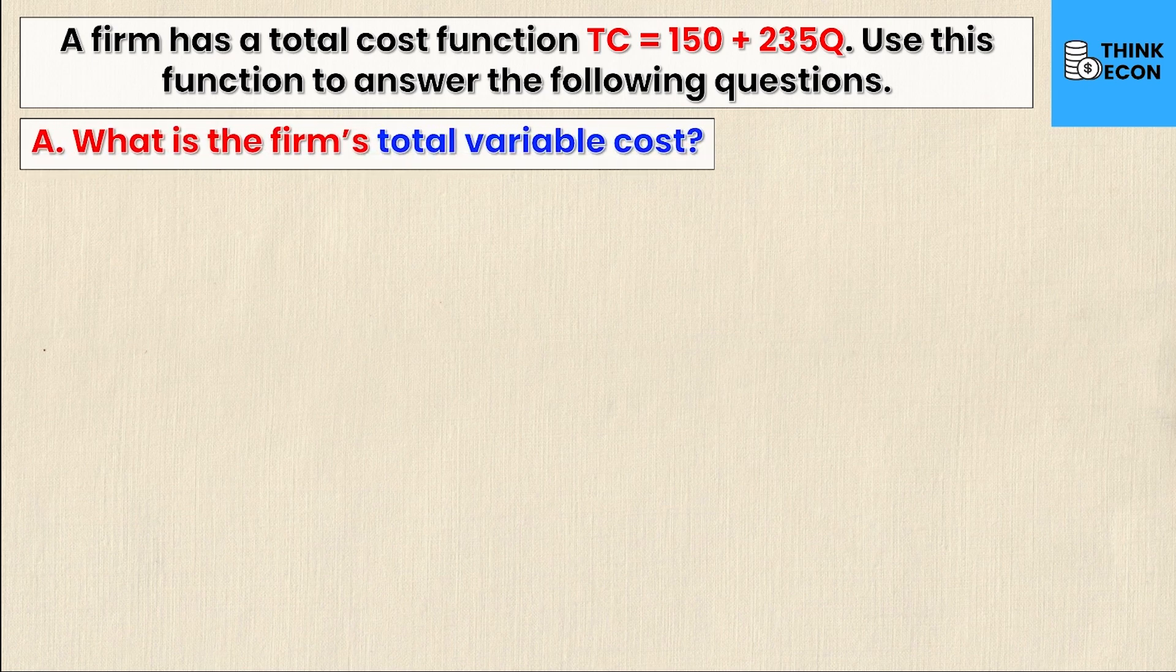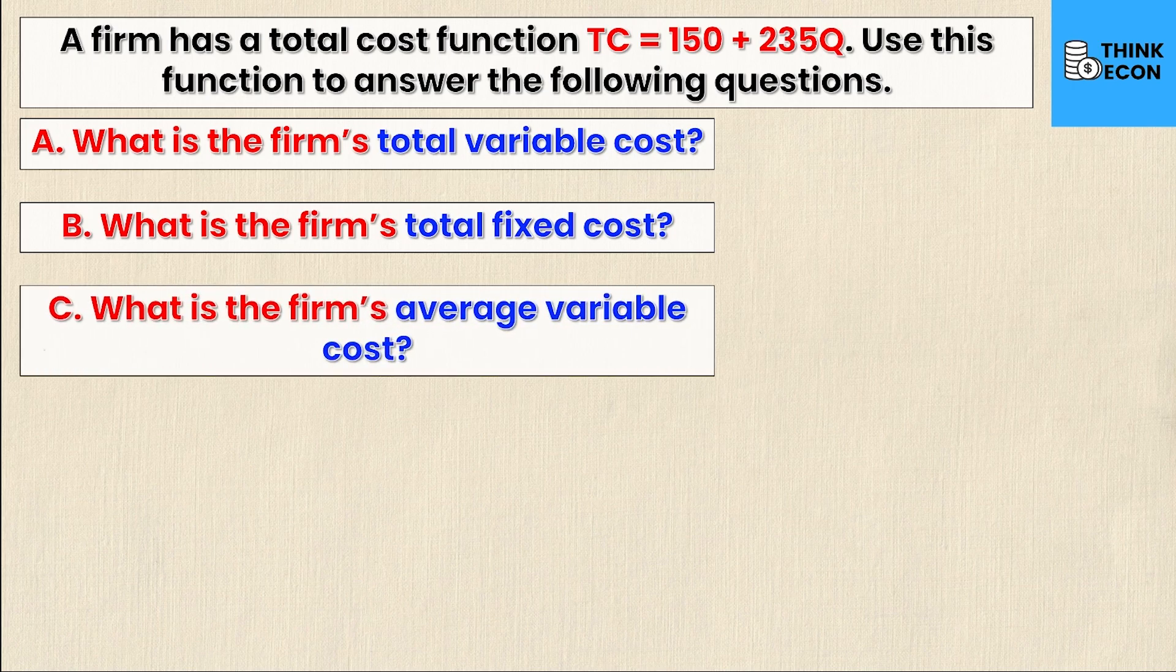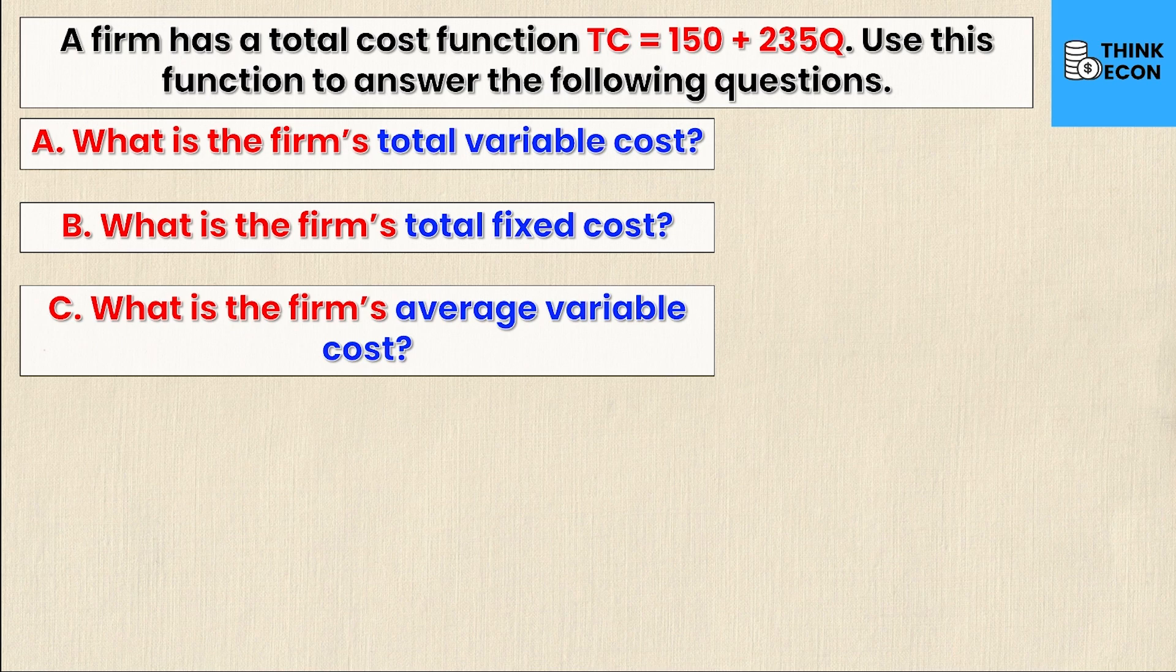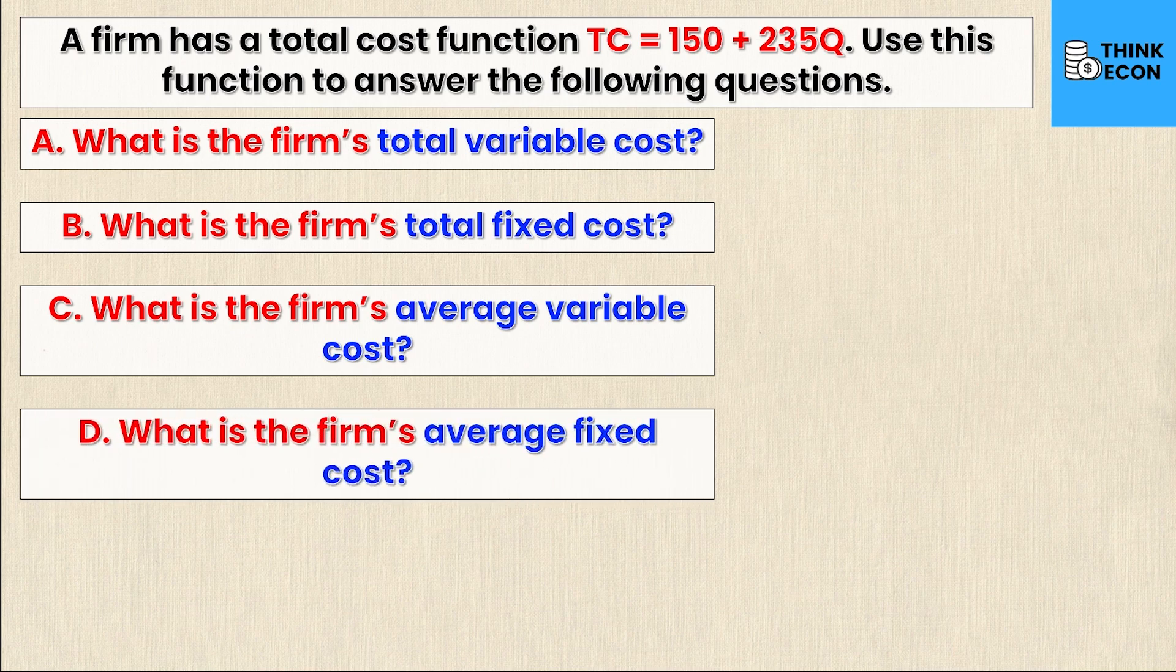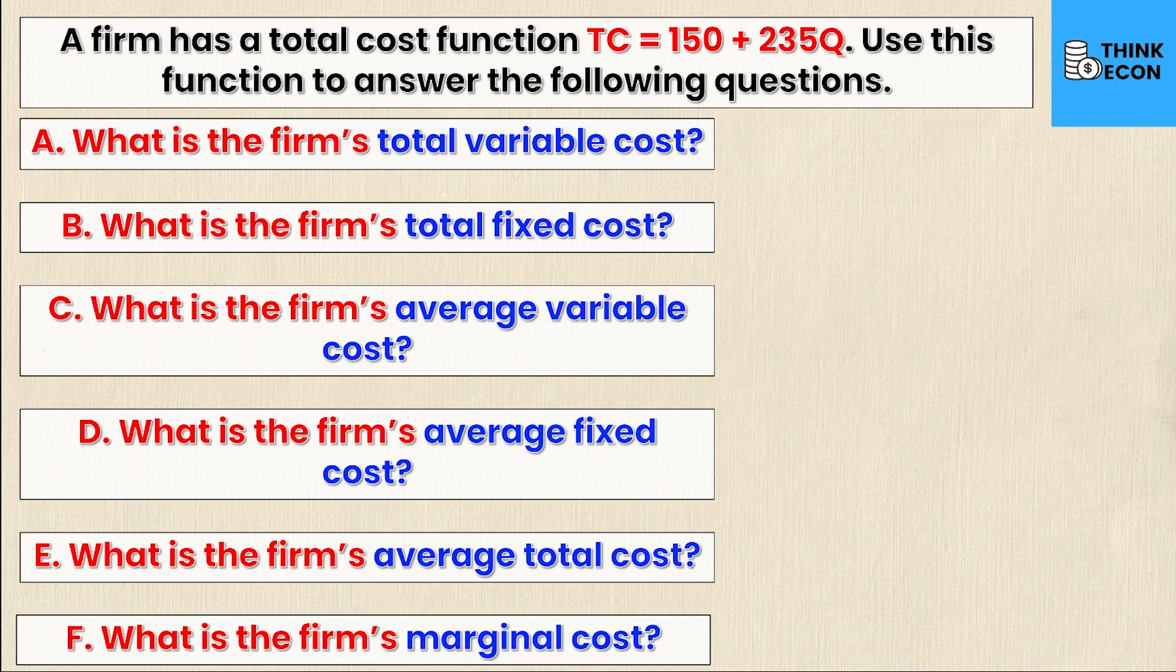First, what is the firm's total variable cost? Second, what is the firm's total fixed cost? Third, what is the firm's average variable cost? What is the firm's average fixed cost? What is the firm's average total cost? And then finally, what is the firm's marginal cost?